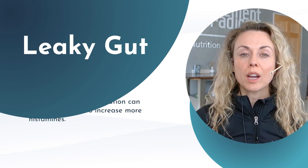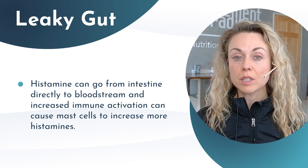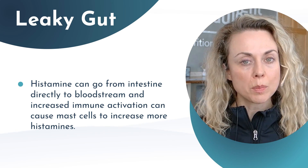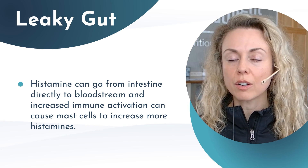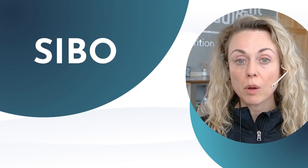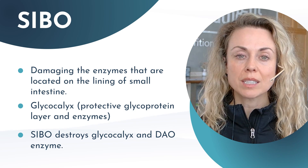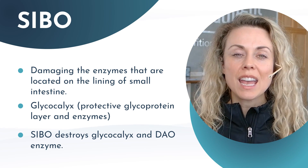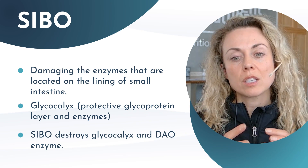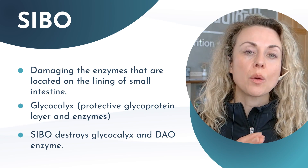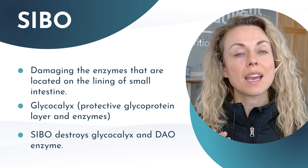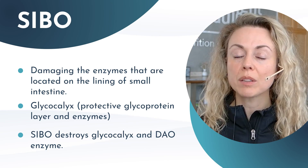With leaky gut — increased intestinal permeability in the lining of the small intestine — histamine can pass directly into the bloodstream, increasing the immune response and releasing lipopolysaccharides (our endotoxins), creating a systemic inflammatory response. With SIBO, the overgrowth of bacteria in the small intestine affects nutrient absorption and damages the microvilli, specifically the glycocalyx — the protective glycoprotein layer where the DAO enzyme resides and helps break down histamines. Chronic SIBO can therefore contribute to histamine intolerance over time due to the inability to break down histamine via DAO.